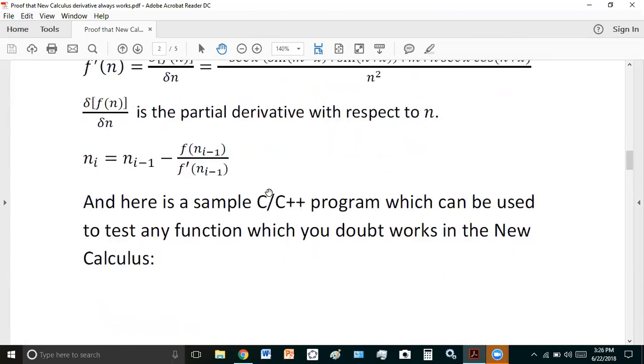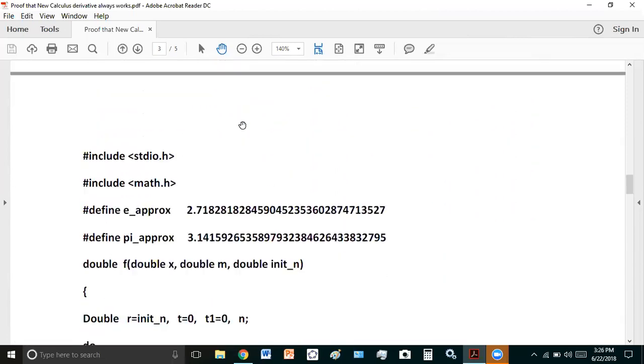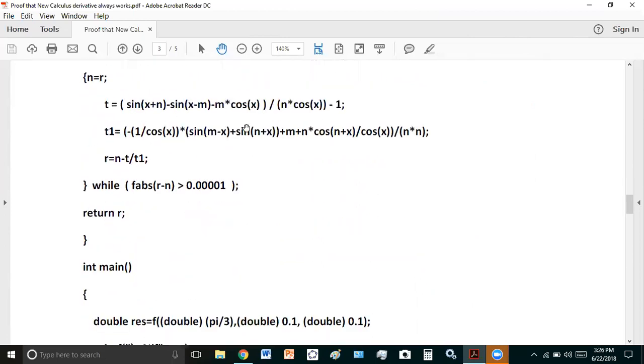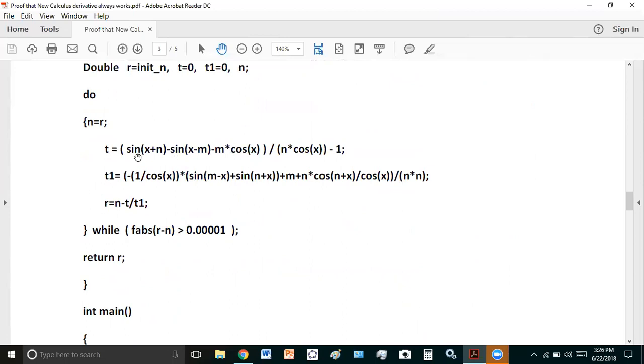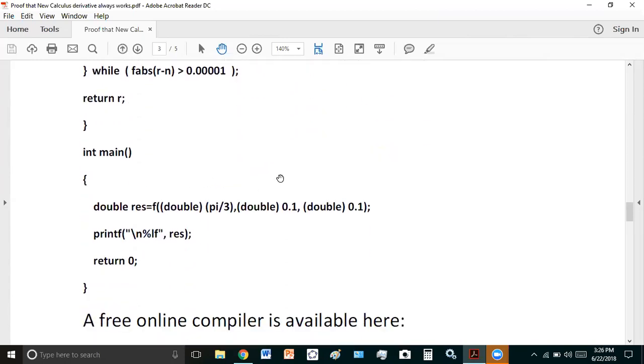So I've also produced a sample little C program for you. And the way it works is, in this line here, you will enter f(n). And in this line here, the partial derivative of f(n), and it will return the value of n.